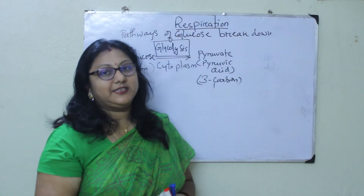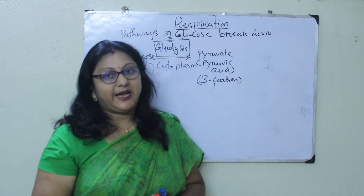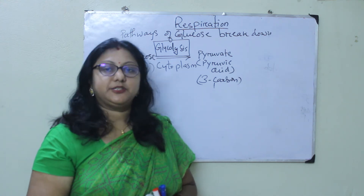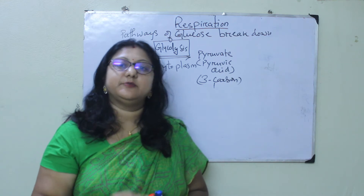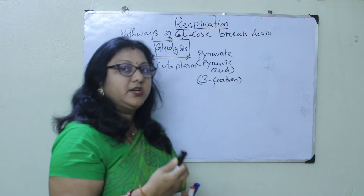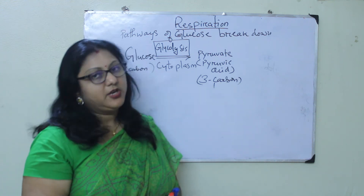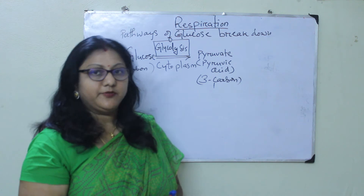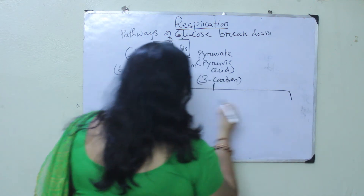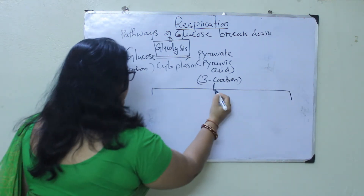Let us see what are the different pathways that glucose follows to produce energy for different types of living organisms. Majorly, glucose follows three different pathways, and these three pathways are divided depending on the requirement of oxygen or the non-requirement of oxygen.